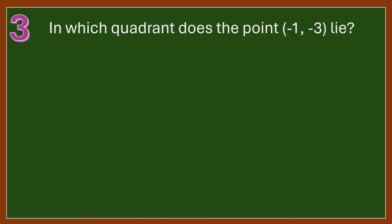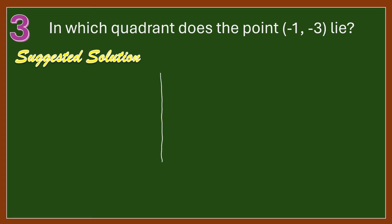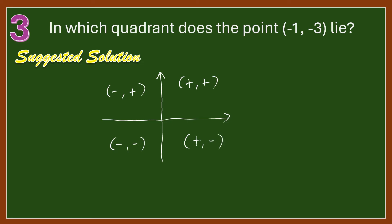Number 3: In which quadrant does the point (negative 1, negative 3) lie? In a rectangular coordinate system, Quadrant 1 has signs positive, positive; Quadrant 2 is negative, positive; Quadrant 3 is negative, negative; and Quadrant 4 is positive, negative. Hence, the point (negative 1, negative 3) is in Quadrant 3.